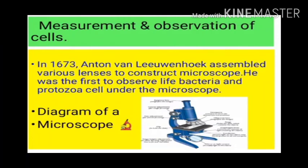The next topic is measurement and observation of cells. In 1673, Anton van Leeuwenhoek assembled various lenses to construct a microscope. You must have seen the compound microscope in your laboratory. He was the first to observe live bacteria and protozoan cells under the microscope.